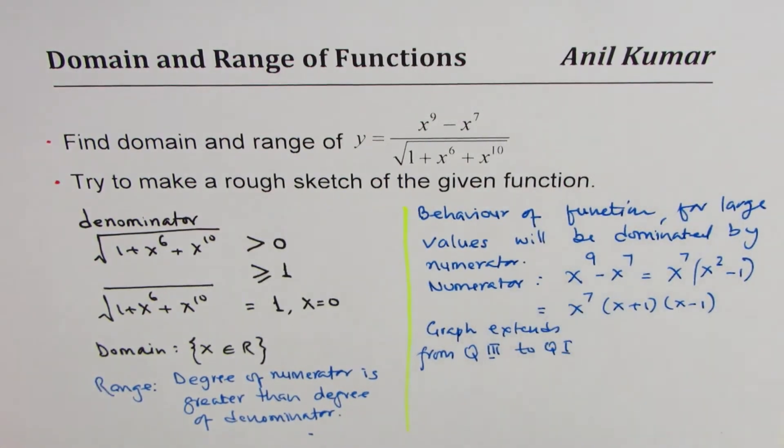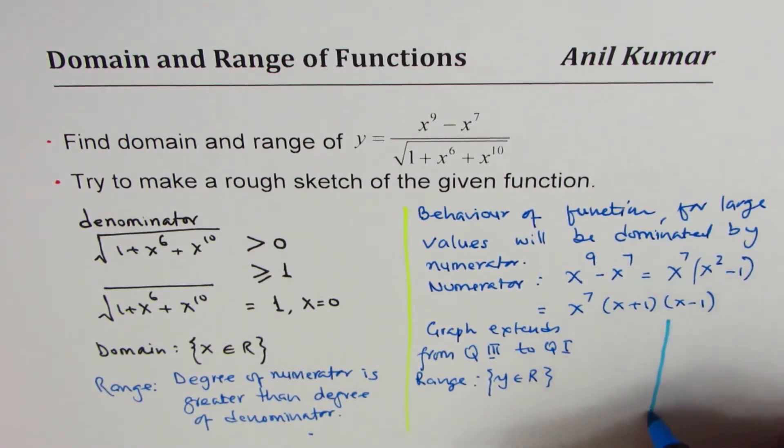So leading coefficient is 1, that is what we get, and therefore we can write that the range is also y belongs to real numbers, there is no restriction. With all this information you can actually sketch the graph.